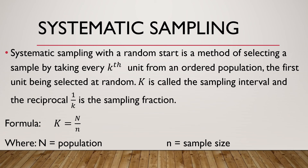In systematic sampling, we have what is called the sampling interval, computed by dividing the population by the sample size. For example, if the population is 1,500 and the sample size is 300, then 1,500 divided by 300 gives us 5 — that is the sampling interval. We choose a starting point from 1 to 5, say the 2nd, meaning every 2nd member of the group is taken as a sample. It could also be every 3rd or every 4th — it depends on the researcher — and we continue until we reach the desired sample size of 300.